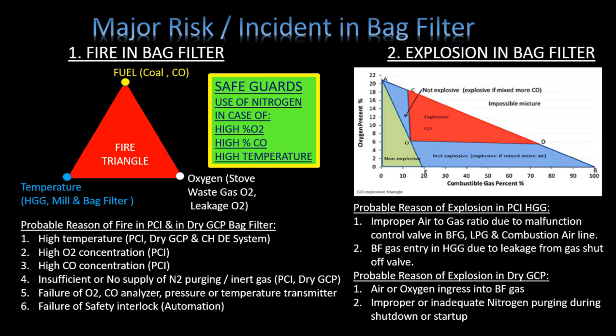Explosion in bag filter: probable reasons of explosion in PCI-HGG include improper air-to-gas ratio due to a malfunctioning control valve in the BFG or LPG combustion airline, and BF gas entry into the HGG due to leakage from the gas shut-off valve. Probable reasons of explosion in dry GCP include air or oxygen ingress into BF gas, and improper or inadequate nitrogen purging during shutdown or startup.